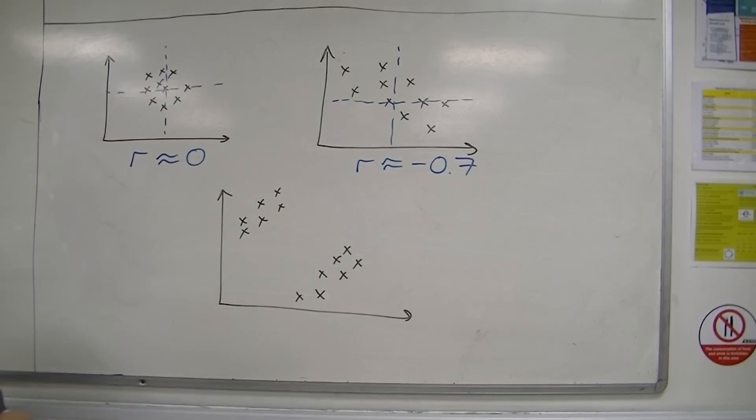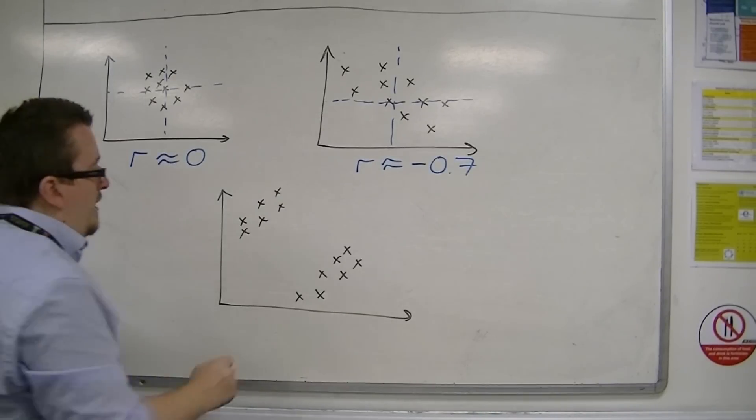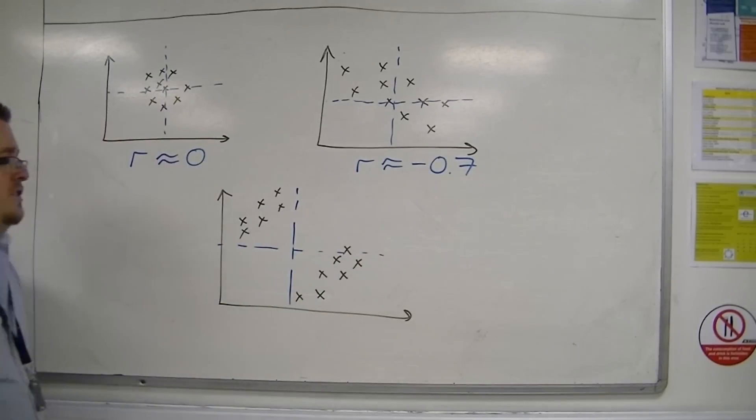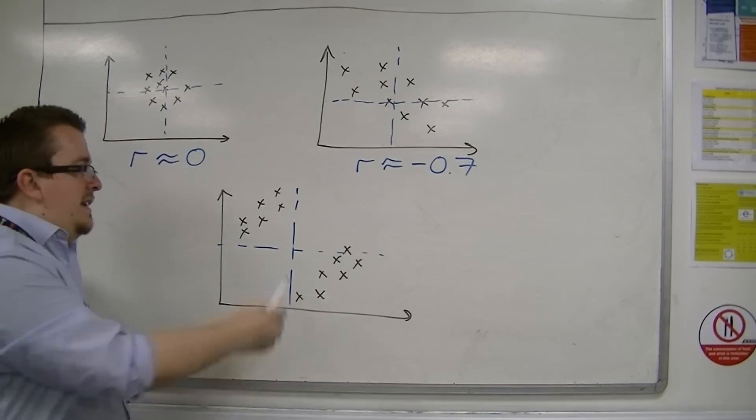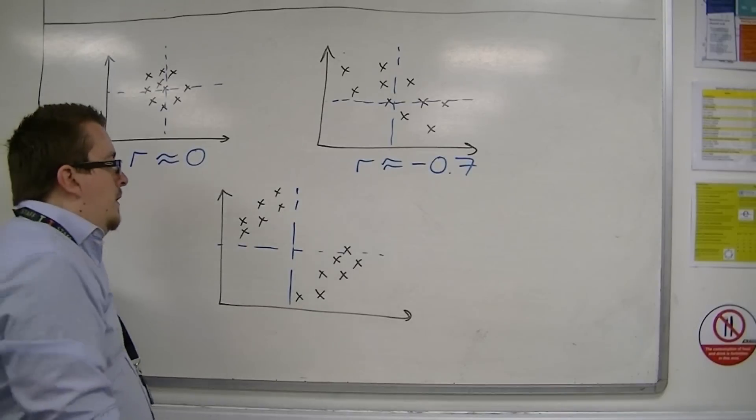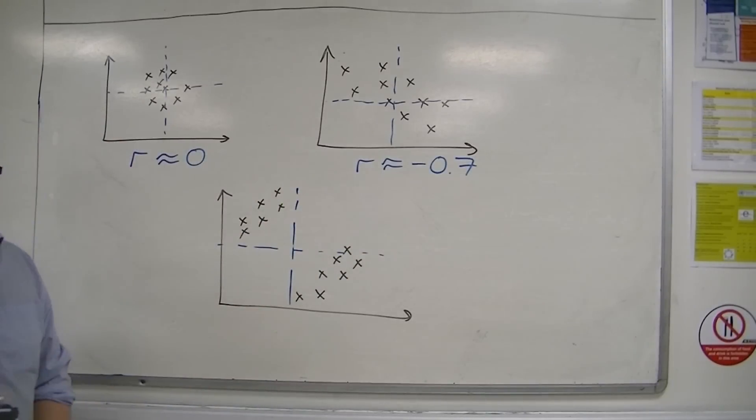They look like they're both in a positive direction. But if we do our lines, you can see that the data is usually in the top left and the bottom right. So actually, you can kind of see that the data is going in that direction.